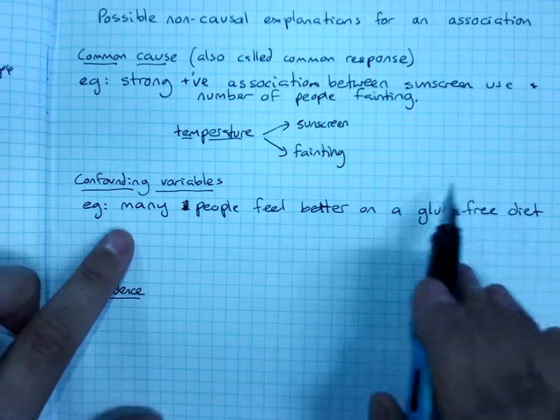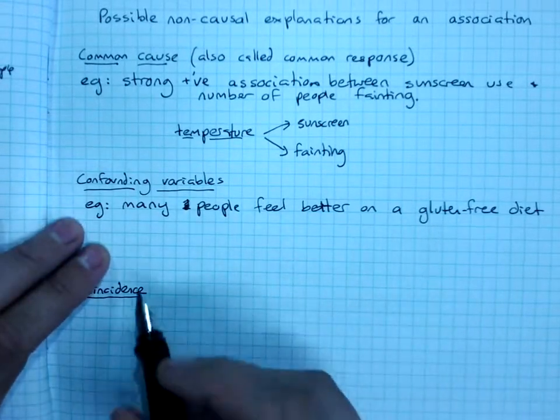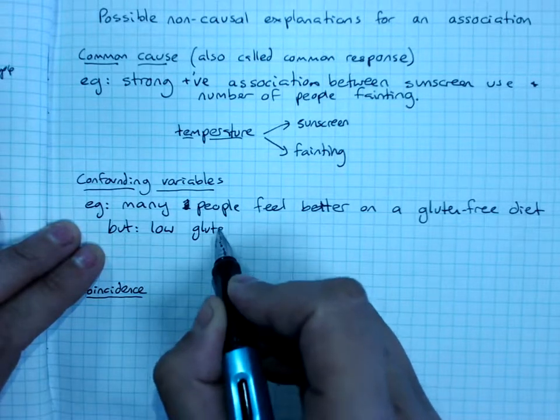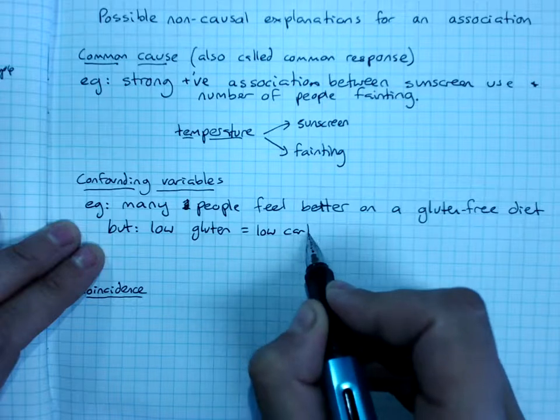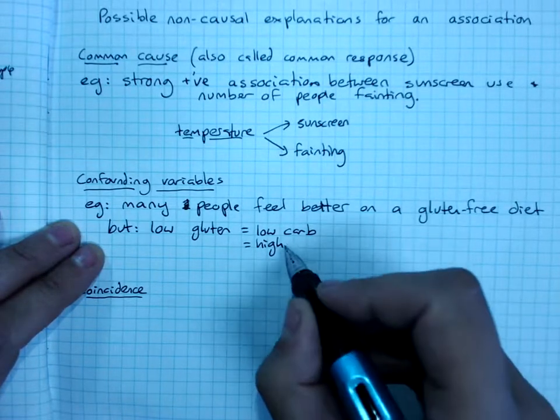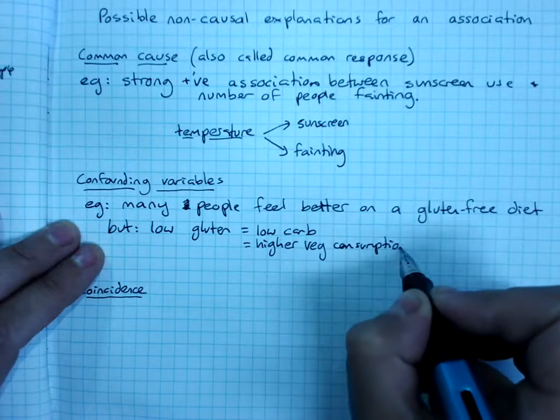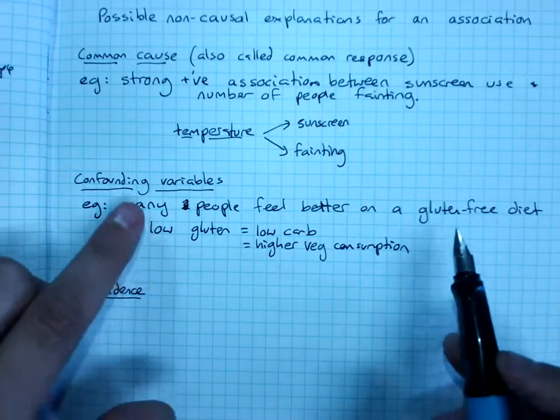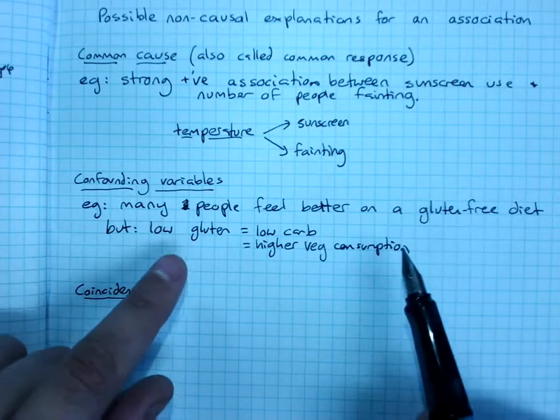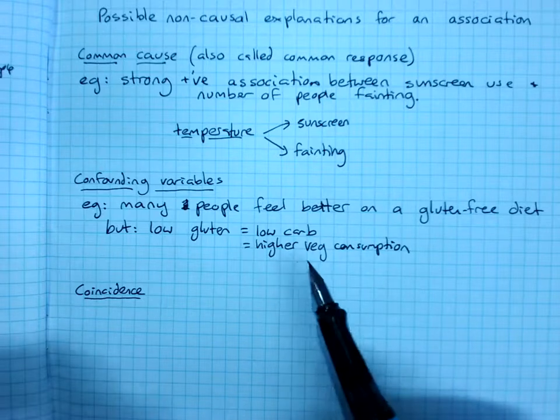But when you start cutting gluten out of your diet, you're also cutting a whole bunch of things. It equals low-carb. It often equals higher vegetable consumption. And so there's all these other things that are going on. We can't be sure that it's the low-gluten that makes people feel better. It could be that it's lower-carb. It could be they're eating more vegetables.